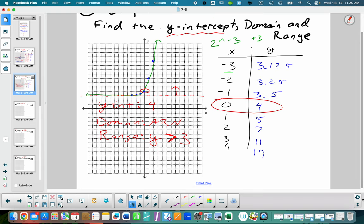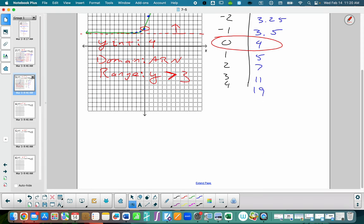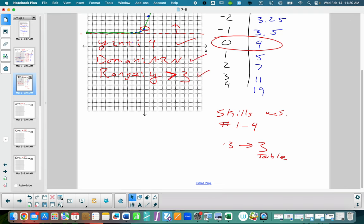So your assignment today is that skills worksheet. You're going to do numbers 1 through 4. And then when you do your tables, just use numbers negative 3 through positive 3 for your tables. And then just like we did before, once you do your table, you're going to graph it, and then you're going to find your y-intercept, your domain, and your range. If you have any questions, I will see you all Monday. Feel free to ask. Have a great day.